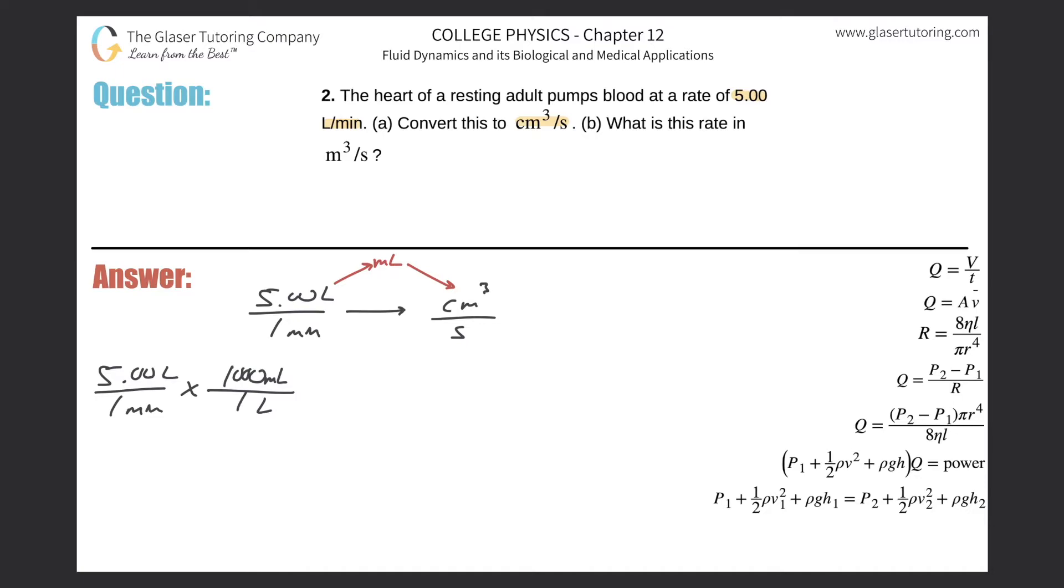We need to convert into cubic centimeters - it's a one-to-one ratio. You can also memorize that for every liter there's a thousand cubic centimeters. That's fine too, that'll work. Now I have cubic centimeters on the top, but now I need to get rid of minutes. I got to convert minutes into seconds.